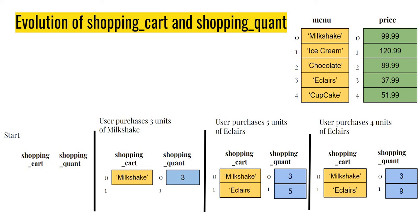Now say the user comes back and wants four more units of eclairs. We add eclairs to the shopping_cart again; however, since eclairs is already present, all we need to do is update the quantity — previously five, now five plus four makes nine. Shopping_cart and shopping_quant will keep evolving as the user enters more choices. At some point the user will say they are done, and at that point these lists will be in their final form.